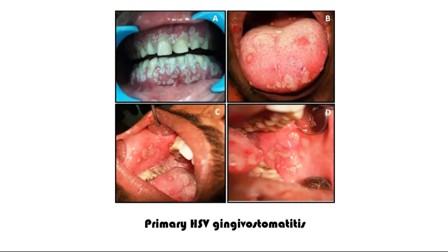Here you can see the primary herpes simplex virus gingivostomatitis. I have to look at the oral cavity in a very thorough way to do the examination and be able to differentiate between the two lesions or the two conditions.